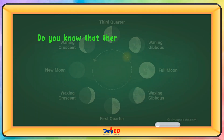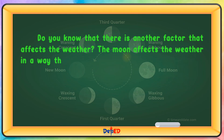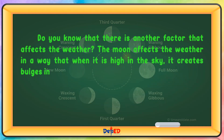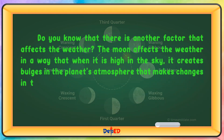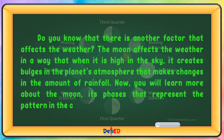Do you know that there is another factor that affects the weather? The Moon affects the weather in a way that when it is high in the sky, it creates bulges in the planet's atmosphere that makes changes in the amount of rainfall. Now, you will learn more about the Moon and its phases that represent the pattern in the changes in its appearance.